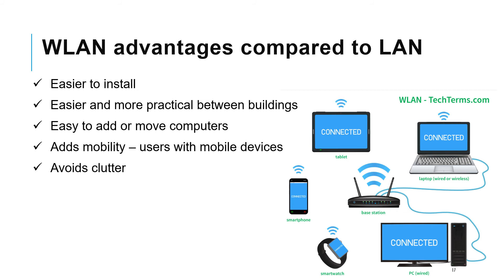A wireless LAN's advantages compared to a wired LAN include: it's much easier to install — you just connect to the Wi-Fi and go; it's more practical when going between buildings; it's easy to add or move computers; you can move around with a laptop without needing to plug in and move cables; and there's no cable clutter.